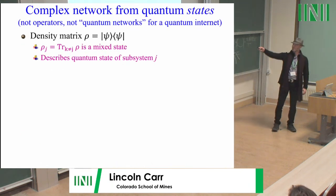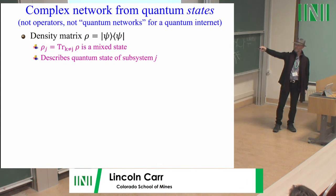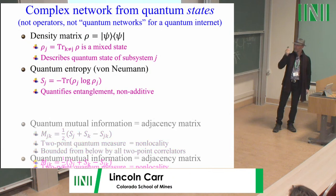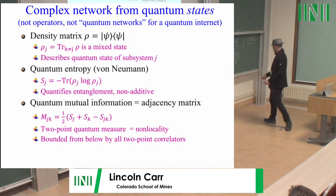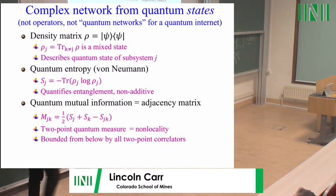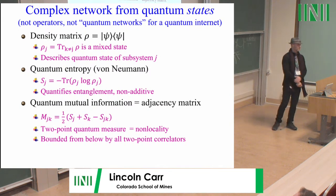The mutual information is the entanglement between two sites j and k. If I only measure j, I have some loss of information — the entanglement with the whole system. If I only measure k, same thing. If I measure j and k simultaneously, I still have loss of information — that's S_jk. When I take S_j plus S_k minus S_jk, what's left is the entanglement between these two qubits. From that I form an adjacency matrix, which gives me a graph — graph theory was mentioned earlier this morning. And this is bounded from below by all two-point correlators in the system.